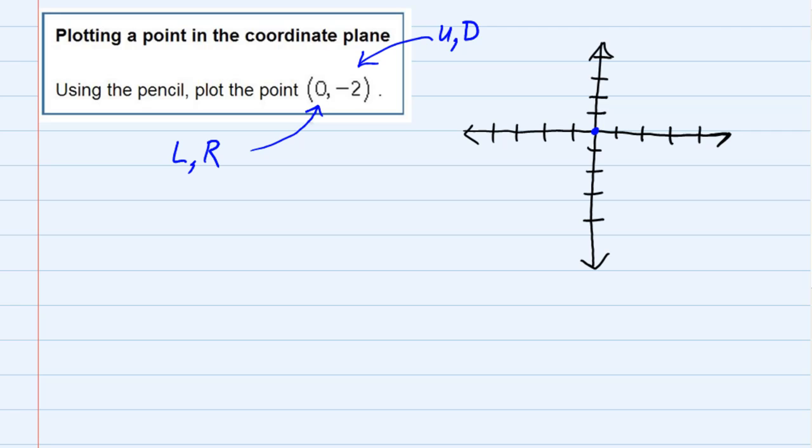And then for the up-down portion, the negative 2, from that point, I would then move down 2 units.